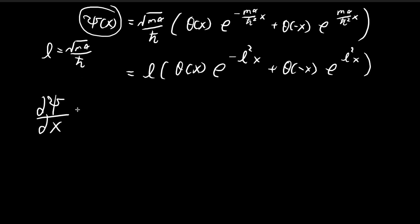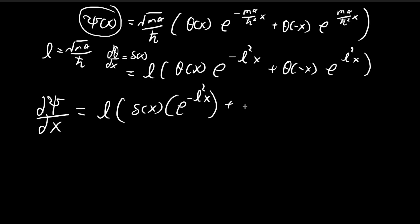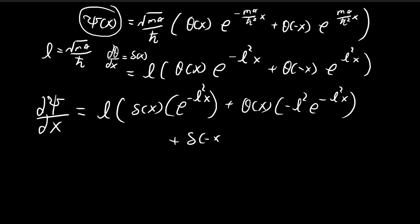To find the second derivative, we start with the first derivative, also using the result from the previous problem that the derivative of the step function equals the Dirac delta function. Differentiating: we get δ(x) times the e term, plus θ(x) times the derivative of the exponential, giving −l²e^(−l²x). Similarly on the other side, we get δ(−x)·(−1) via the chain rule, retaining the e term, plus the step function times l²e^(l²x).